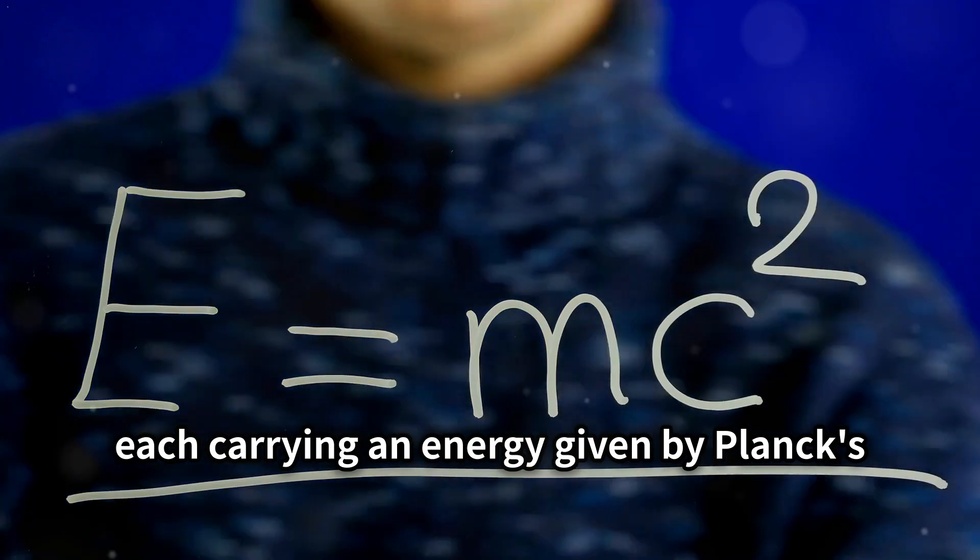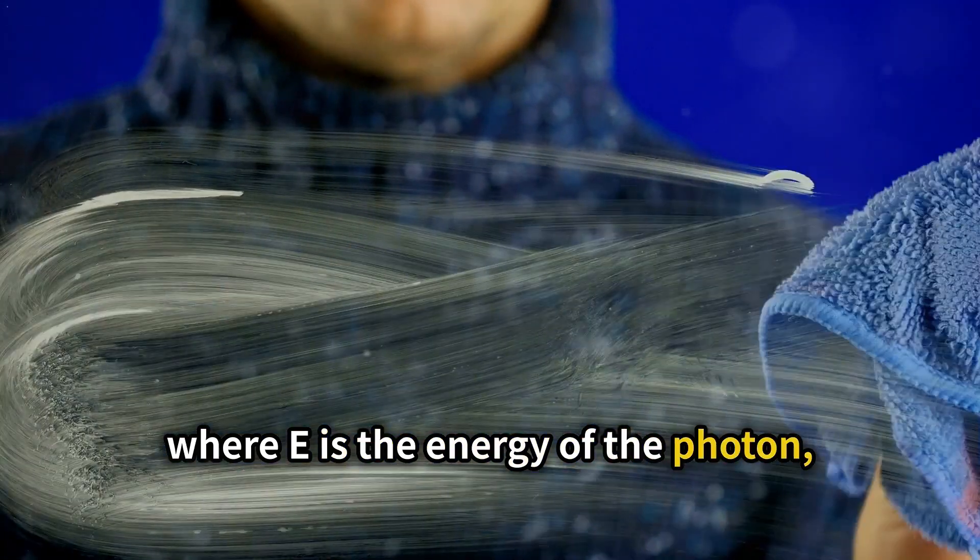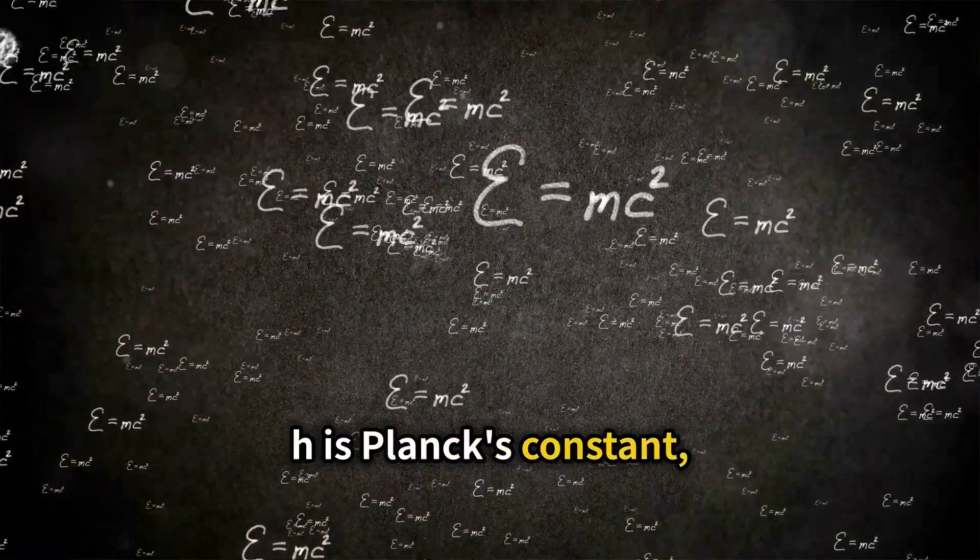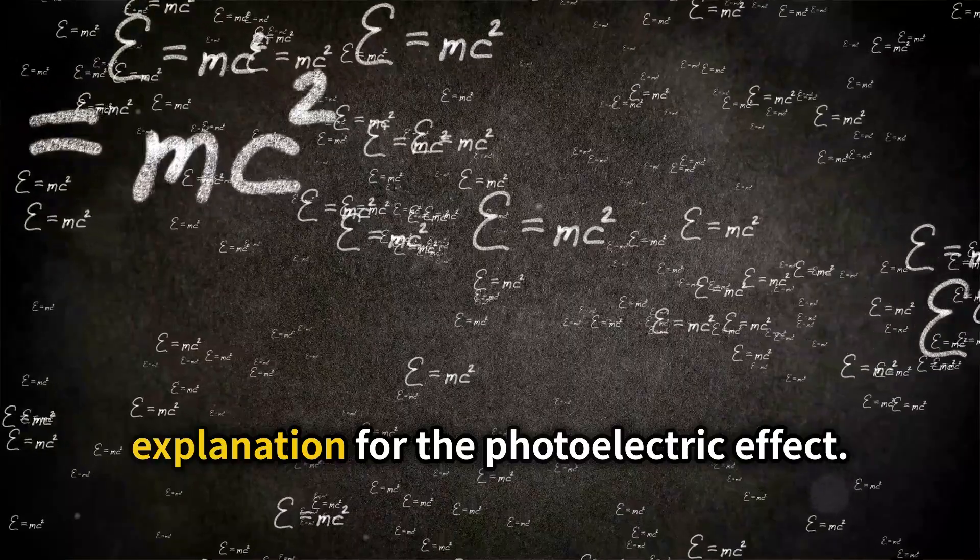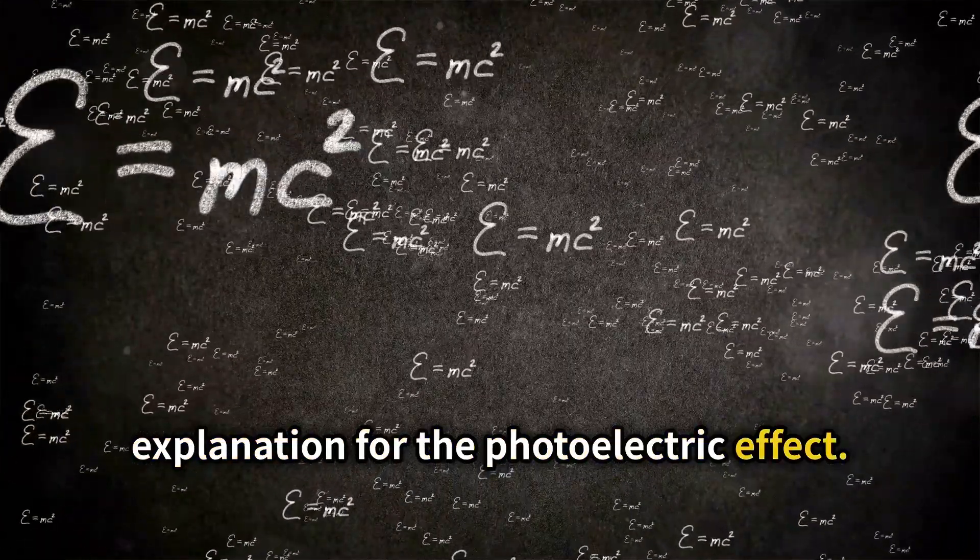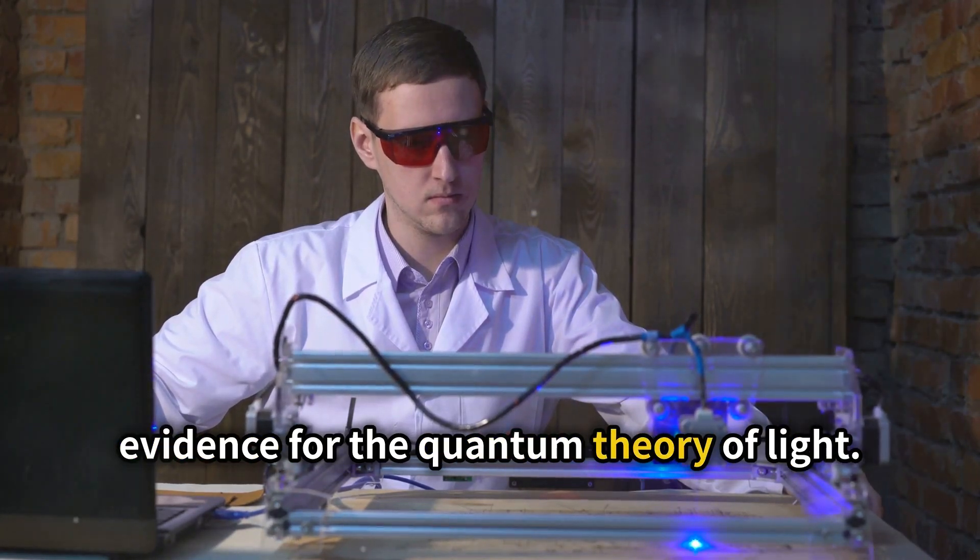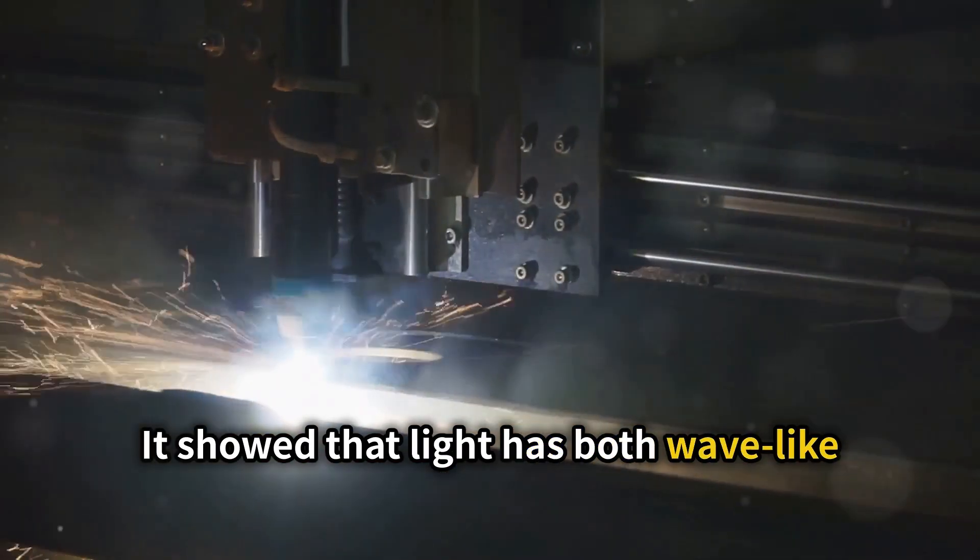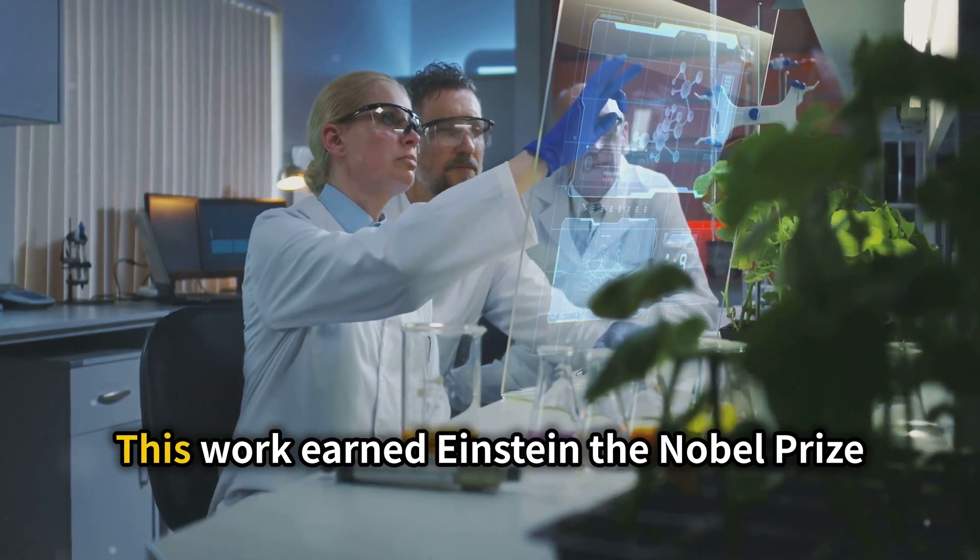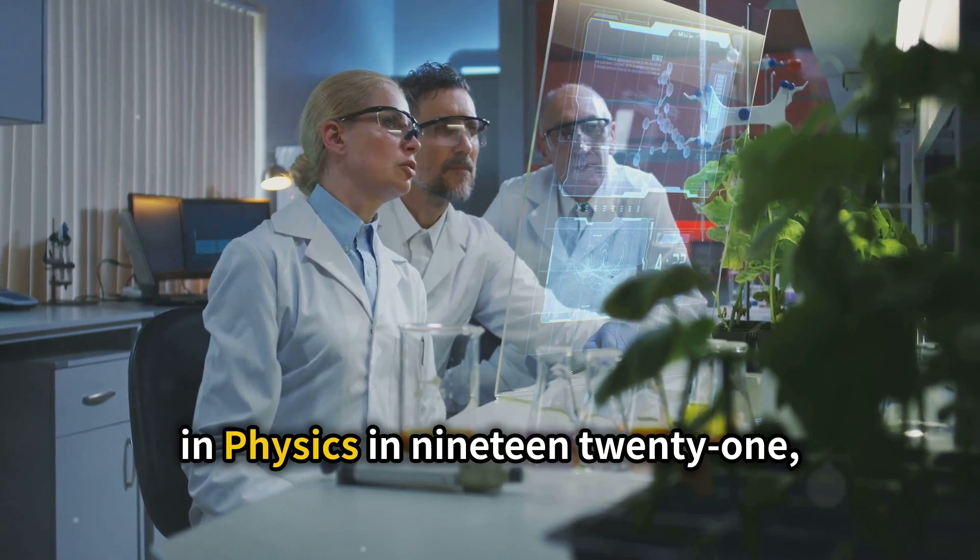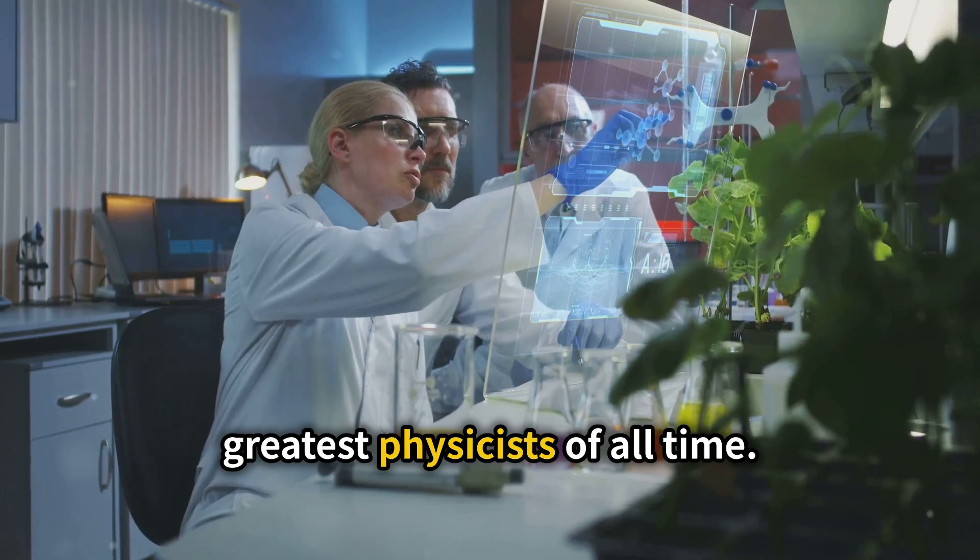Each photon carries an energy given by Planck's equation E equals h times nu, where E is the energy of the photon, h is Planck's constant, and nu is the frequency of the light. This equation provided a clear and simple explanation for the photoelectric effect. Einstein's explanation of the photoelectric effect was a key piece of evidence for the quantum theory of light. It showed that light has both wave-like and particle-like properties, a concept that is fundamental to quantum mechanics. This work earned Einstein the Nobel Prize in physics in 1921, cementing his place as one of the greatest physicists of all time.